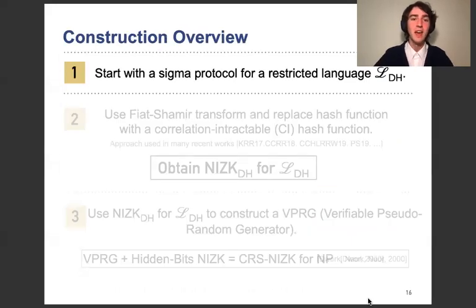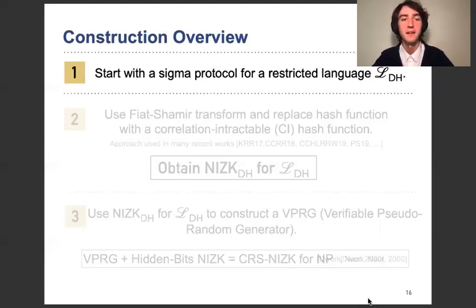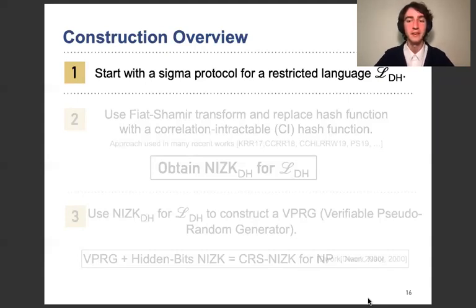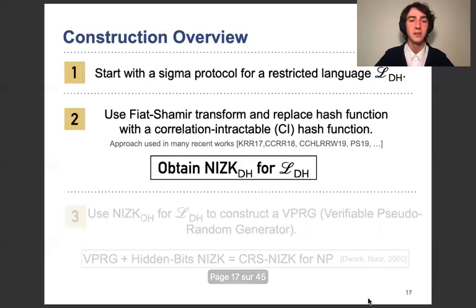So now we have reached the construction overview. I will briefly describe the blueprint. Basically, we have three stages. The first is to start with a Sigma protocol for a restricted language — I call this L_DH, which is a Diffie-Hellman language that I will describe later. Then in the second stage, we use the Fiat-Shamir transform, as has been done in a series of recent works.